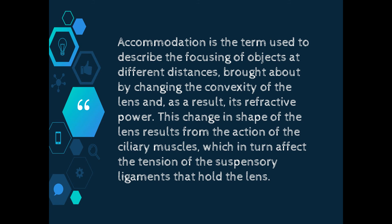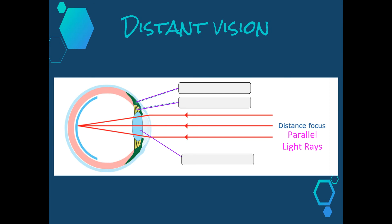So accommodation is the term used to describe the focusing of objects at different distances, brought about by changing the convexity of the lens and as a result, its refractive power. This change in the shape of the lens results from the action of the ciliary muscles, which in turn affect the tension of the suspensory ligaments that hold the lens.